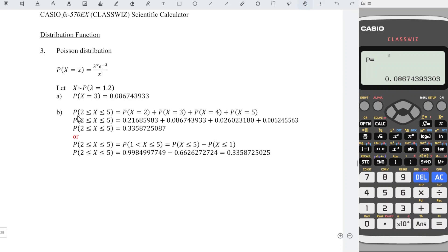However, let's say we are asked for an interval. We choose Poisson PD to choose list. We need the values 2, 3, 4, 5. So we input 2, 3, 4 and 5.